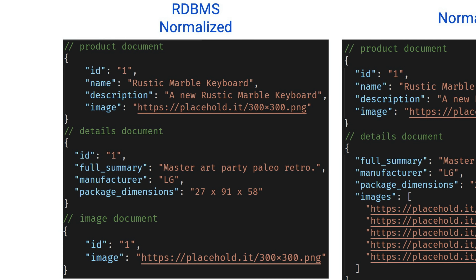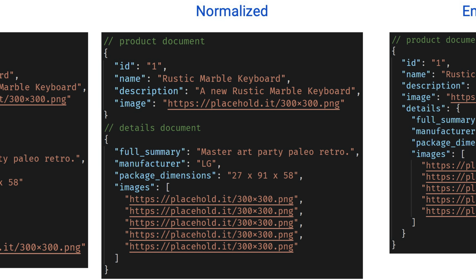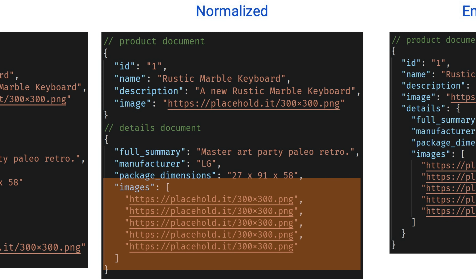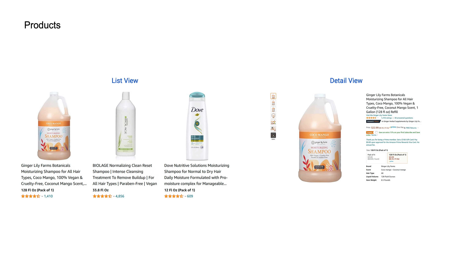In a fully normalized relational database structure you end up with three tables: the product table, the details table, and an image table, since images are a list of strings that SQL can't natively store in one field. This is not ideal for NoSQL because to get a single product you'd have to get the product, the details, and the images separately and join them in your code. With Redis JSON you can nest documents — the simplest example is just nesting images so you make one query for the details and return all the images together.